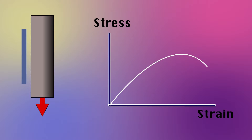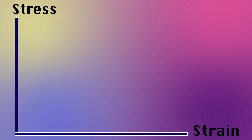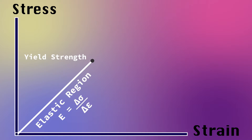The test ends when the material breaks. Let's take a closer look at this curve. The first region is called the elastic or linear region. Deformation here is not permanent, meaning that the material will snap back to its original form once the load is removed.